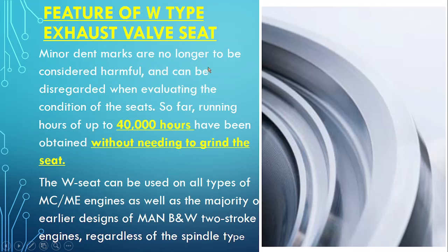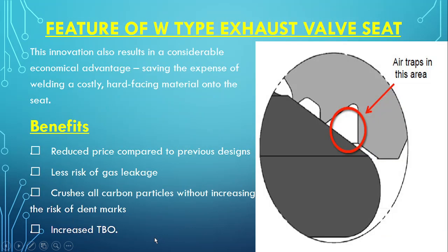Features of the W type exhaust valve seat: Minor dent marks are no longer considered harmful and can be disregarded when evaluating the condition of the seat. Running hours of up to 40,000 hours have been obtained without needing to grind the seat — very important, up to 40,000 hours it does not require any type of maintenance. The W seat can be used on all types of MAN B&W ME engines as well as the majority of earlier designs of MAN B&W two-stroke engines, regardless of the spindle type.